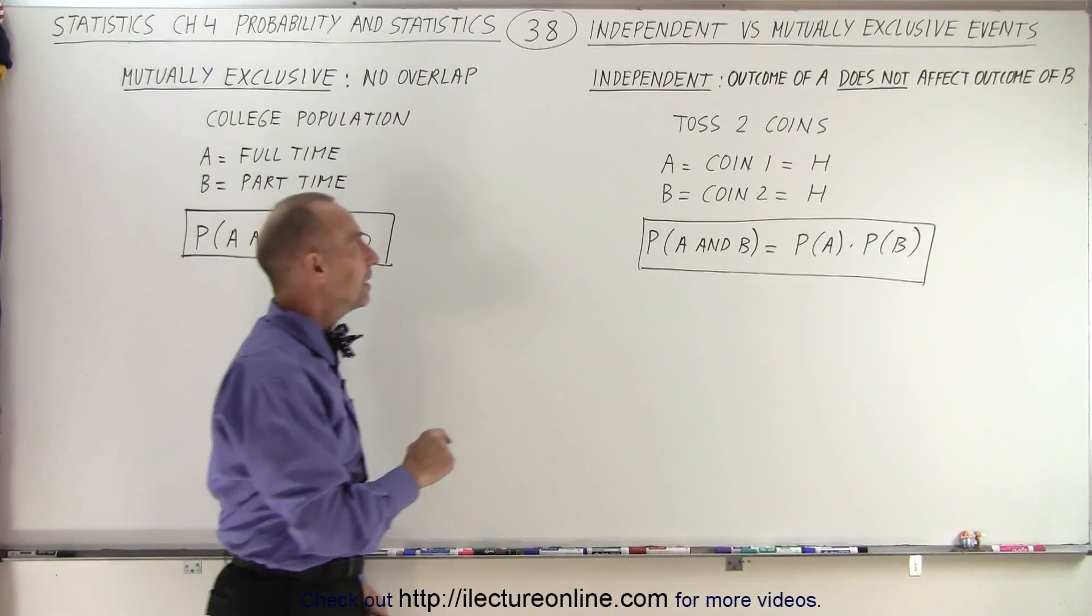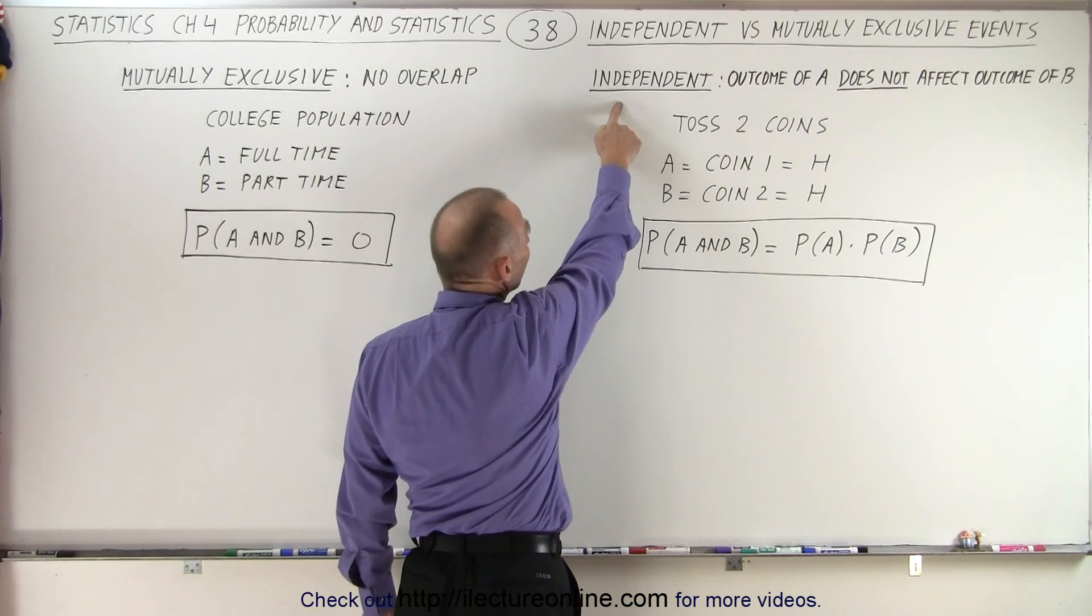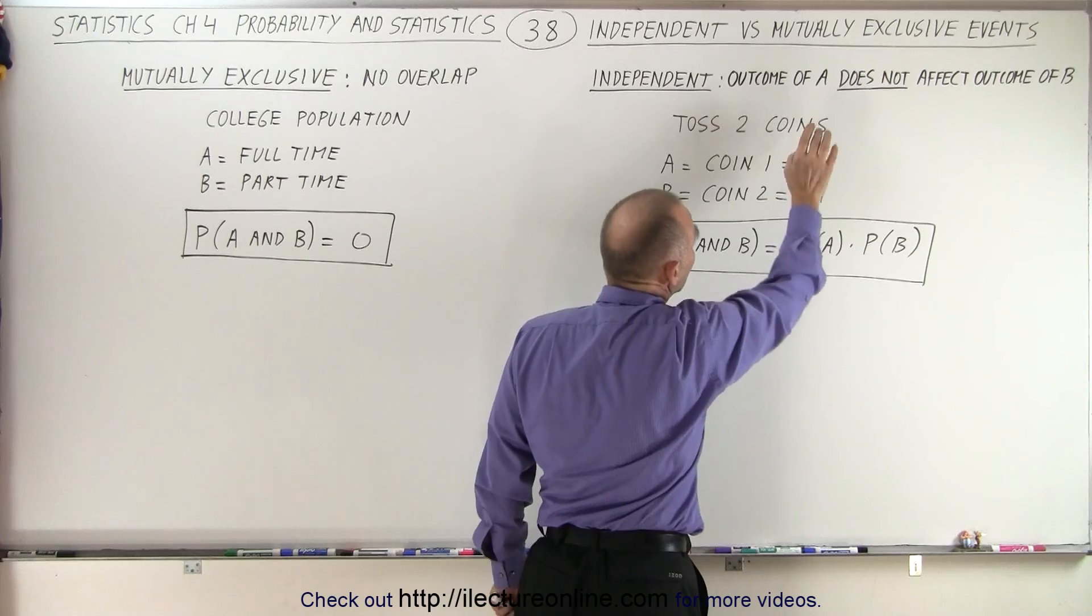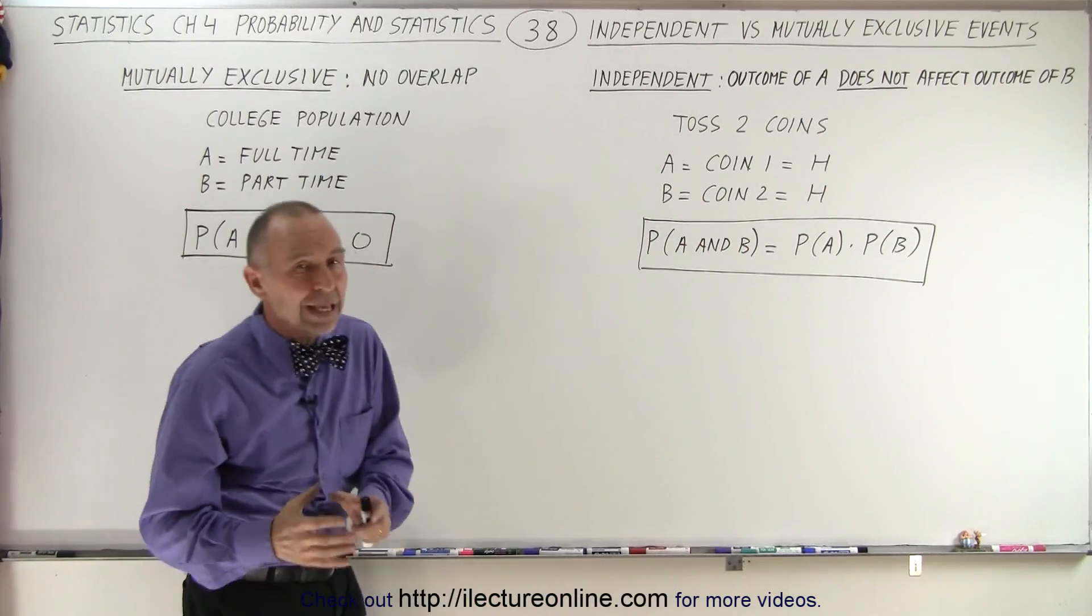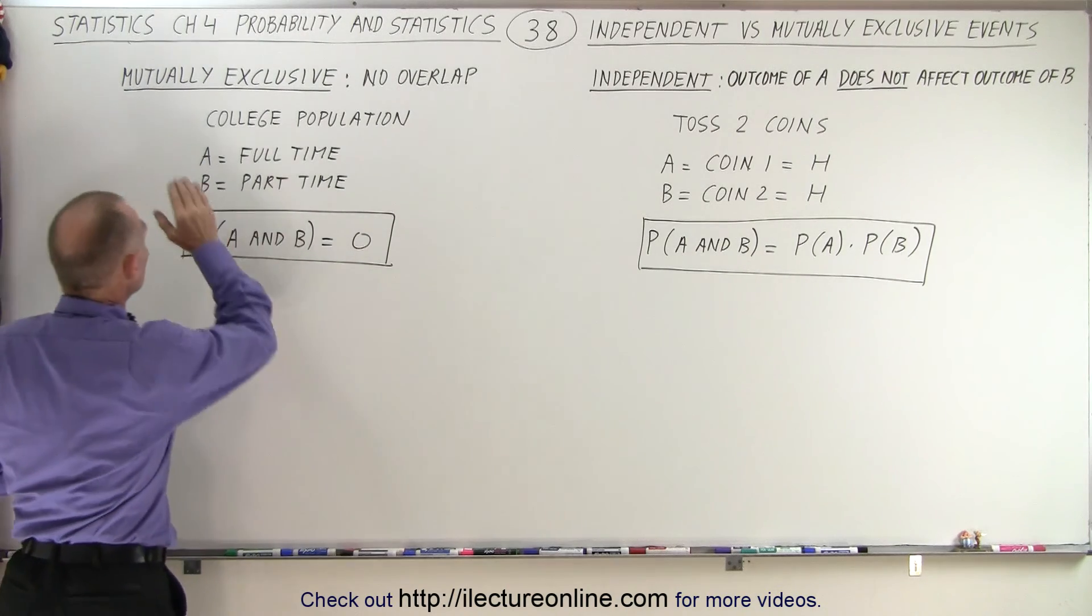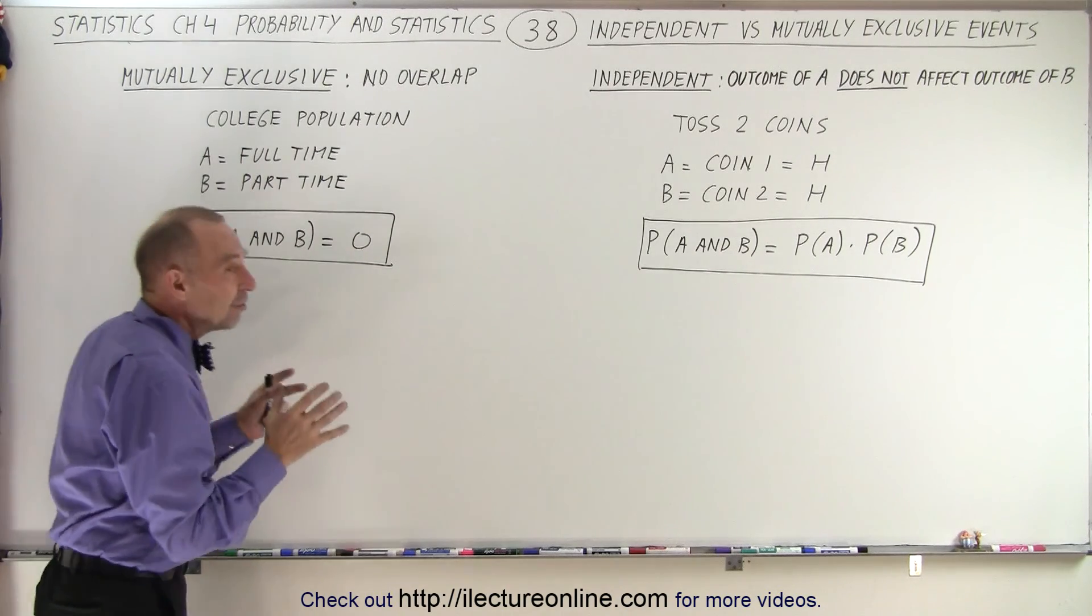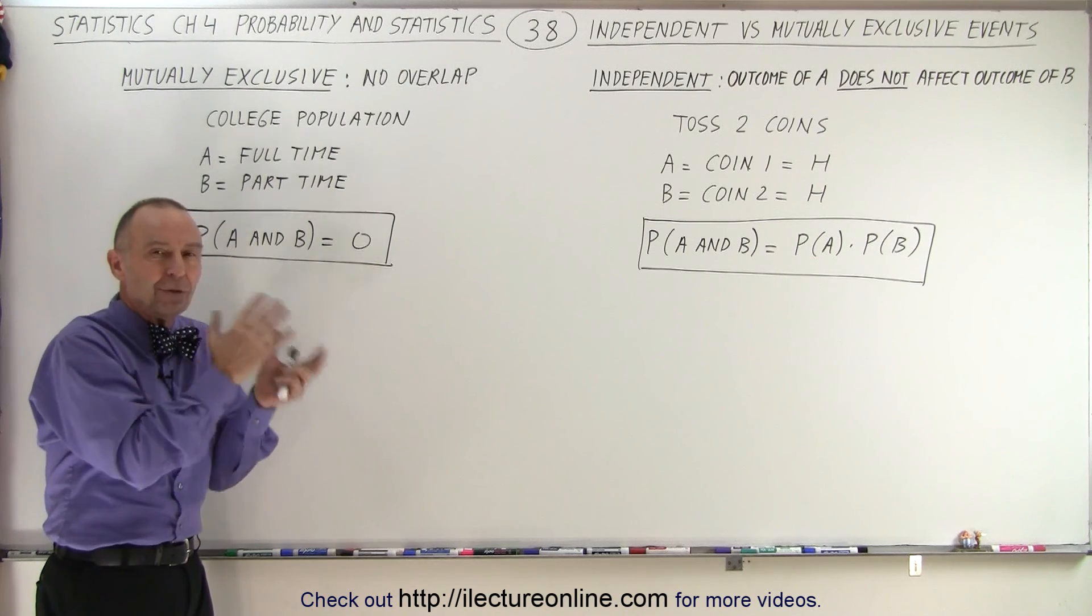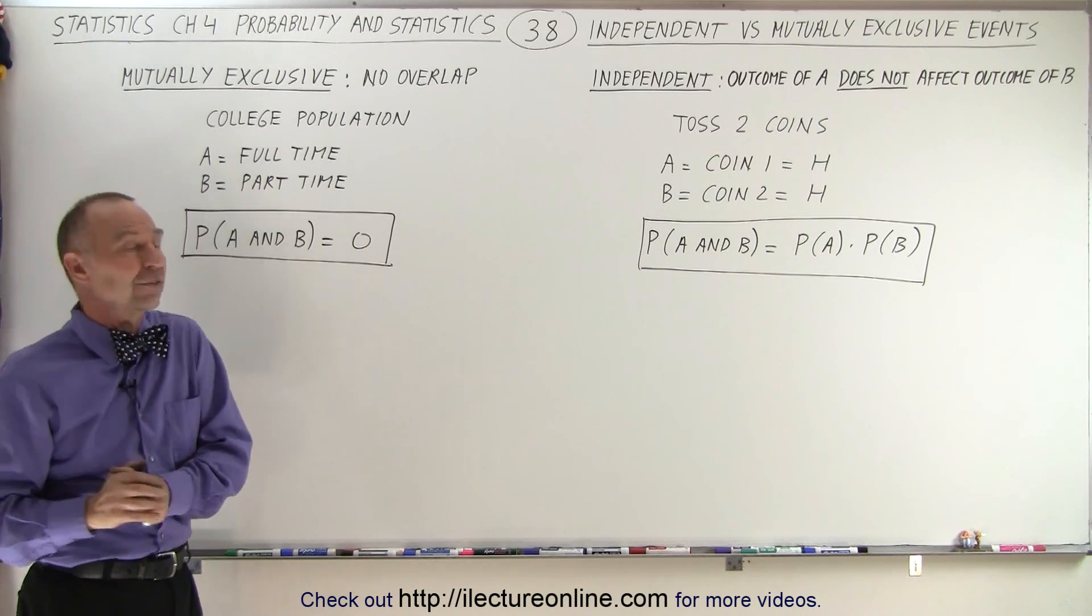Well, first let's look at the definitions again. Independent events are events where the outcome of one, in this case A, does not affect the outcome of B. That's the definition of independent events. When we look at mutually exclusive events, that means there's simply no overlap. Whatever is the possibility for one cannot be the possibility of the other.